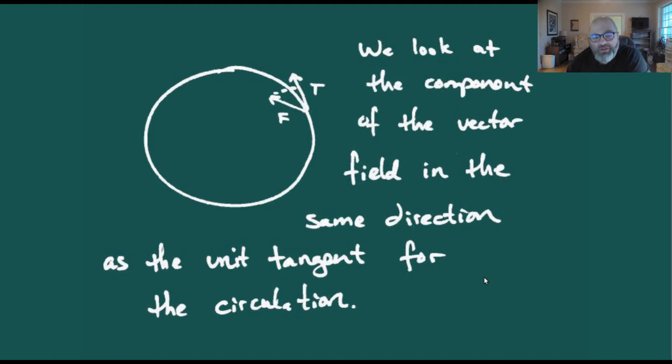In contrast to the flux integral where we were looking at the component of the vector field that was normal to the curve, when we're talking about circulation we're really just saying how much of this vector field is going to give us a boost in the direction of our travel.